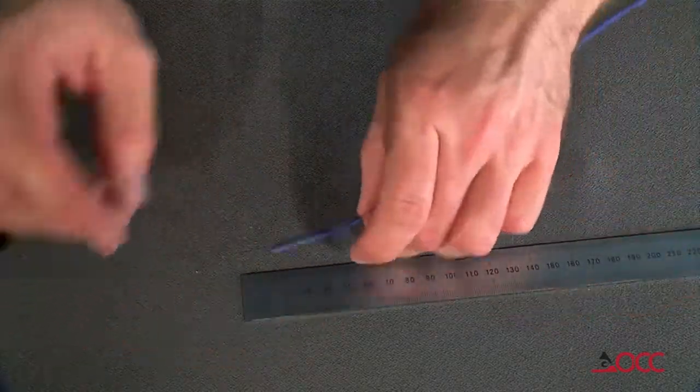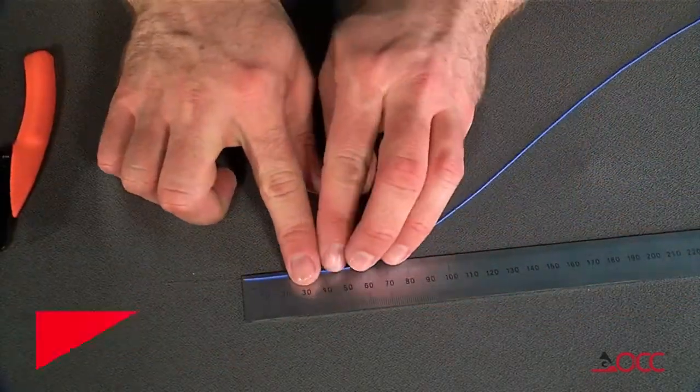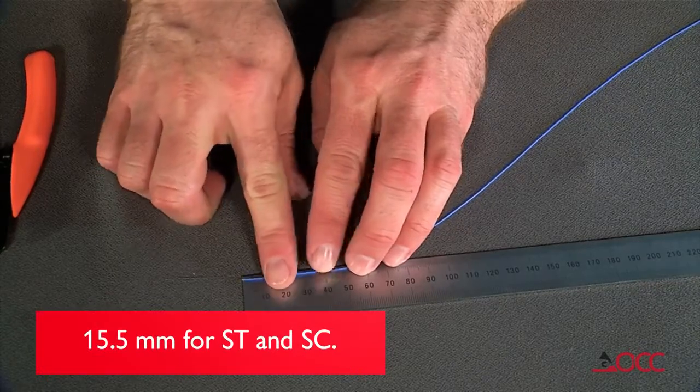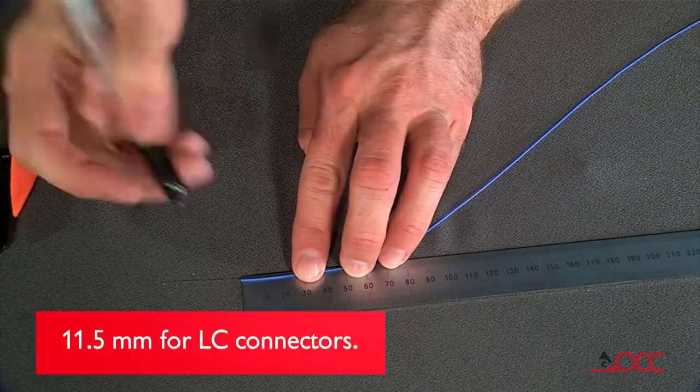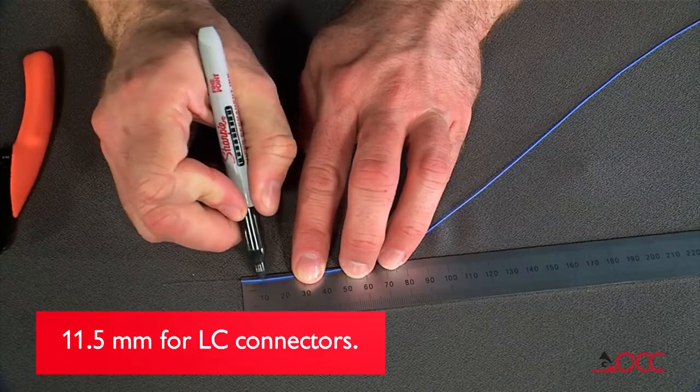From where the 900 micron buffer ends, place a mark at 15.5 millimeters for ST and SC connectors, or at 11.5 millimeters for LC connectors.